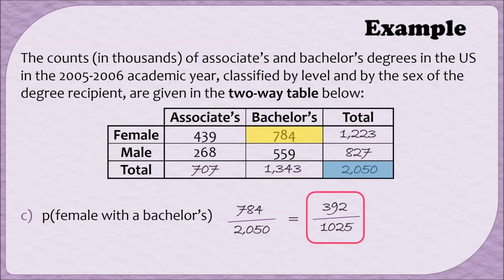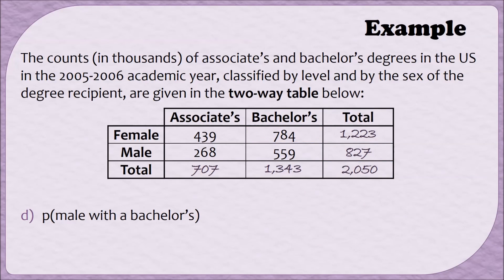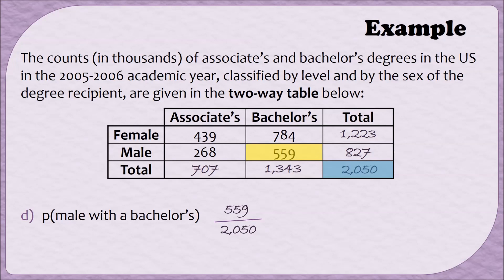Let's do one more example. This time we've been asked to find the probability of finding a male with a bachelor's degree. The box I'm interested in holds the value 559—this box is in the row for male and in the column for bachelors, so there were 559 men with a bachelor's degree. That will be our numerator, and we're still looking out of all of the people, so our denominator is still 2,050. This fraction does not reduce, so 559 over 2,050 is our answer.